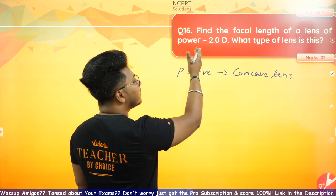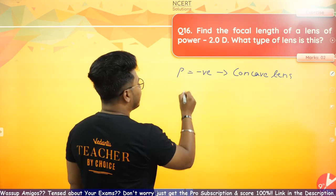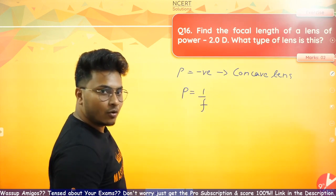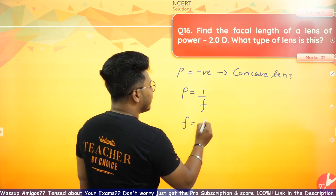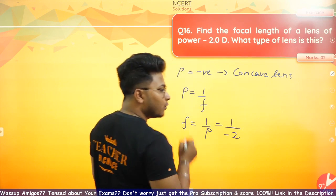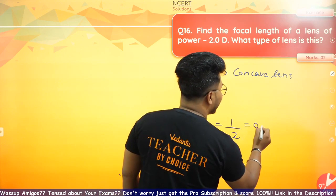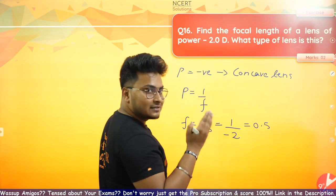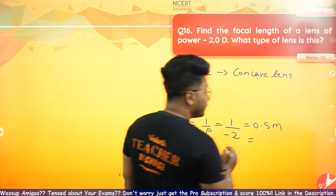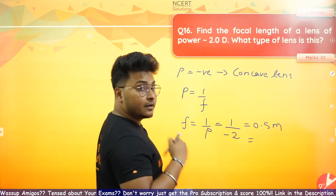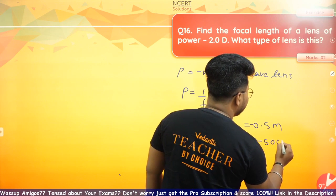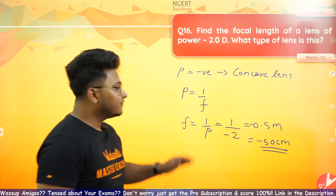To find the focal length, use the formula: P equals 1 upon F, that is, power equals 1 upon focal length. So focal length equals 1 upon power, which is 1 upon minus 2.0, giving 0.5 meters. Focal length is a quantity of distance, so the answer is 0.5 meters. You can convert it to centimeters, and the answer comes out to be minus 50 centimeters — that is your focal length.